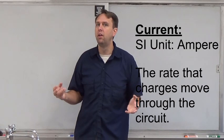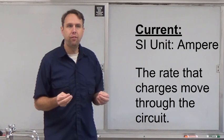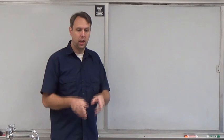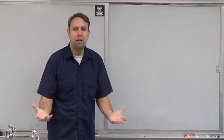The second term we need to define is current. The SI unit for current is the ampere or amp. And it's defined as the rate that the charges are flowing through your circuit. It's literally like if you were looking at one spot in the wire, how many electrons go by each second? That's your current.